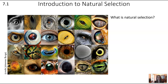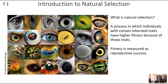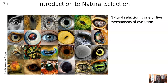What is natural selection? Natural selection is where individuals with certain inherited traits have higher fitness because of those traits, and fitness is measured as reproductive success. So some organisms have a higher reproductive success than others because of the traits they have. Natural selection is one of the five mechanisms of evolution — we'll talk about those other four mechanisms in a later video.